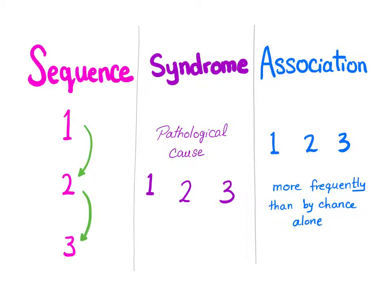Syndrome is an association of more than one finding, symptom, or sign, but there is a pathological cause — there is a cause that we can identify and point to.